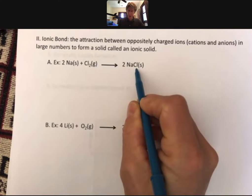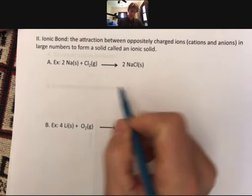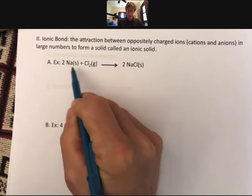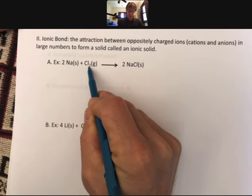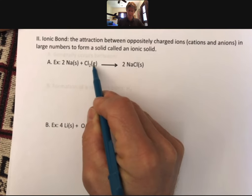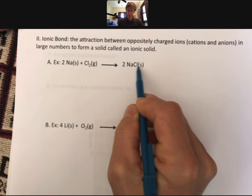Sodium chloride is an ionic solid. We're imagining in this reaction that we're going from two moles of sodium solid plus one mole of chlorine gas to make two moles of sodium chloride solid.